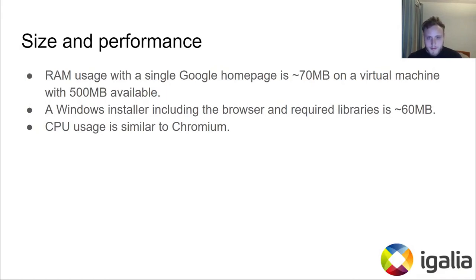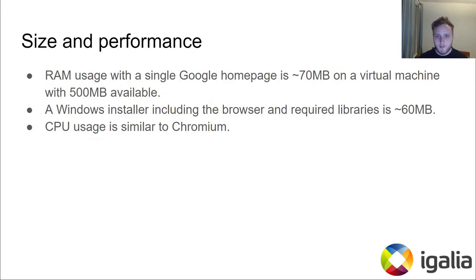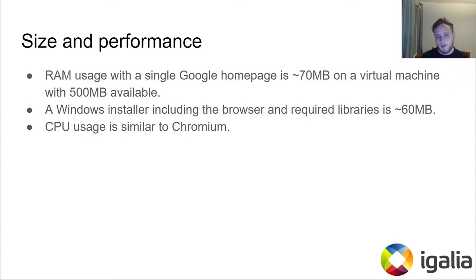In terms of performance, CEF is similar to a single-page Chromium browser, though RAM usage seems to be a little bit lower. We tested our application on a virtual machine with 500 megabytes of RAM and a browser with just the Google homepage opened used about 70 megabytes of RAM. The Windows installer as well as the unpacked browser used just about 60 megabytes of disk space. CPU usage is similar to Chromium, though we didn't do any precise measurements and our virtual machines had a good amount of CPU allocated, so we didn't have any issues there.